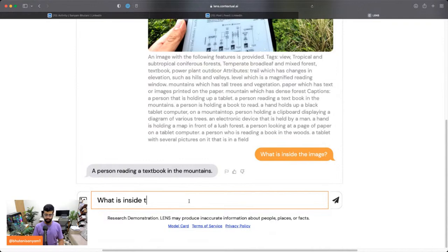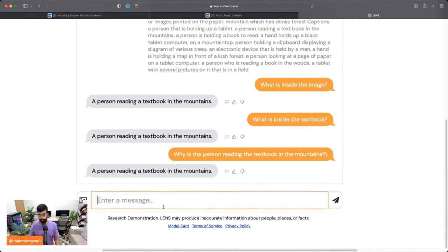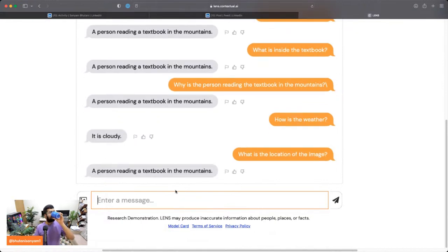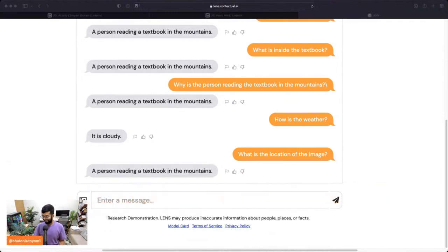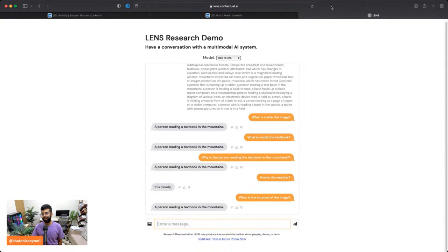Let's try to ask it what is inside the image. Person is reading a textbook in the mountains. I'd say good enough. What is inside the textbook? I don't think it will get this one right. No, it did not. Why is the person reading the textbook in the mountains? I guess it's just stuck in this loop. How is the weather? It is cloudy. Can you ask about the location of the image? What is the location of the image?